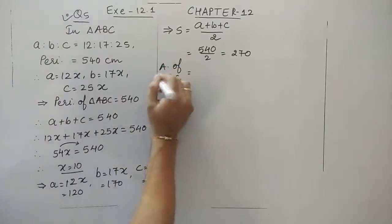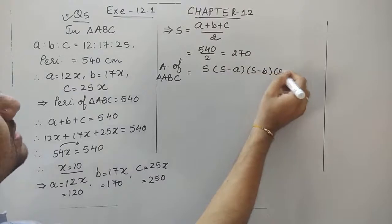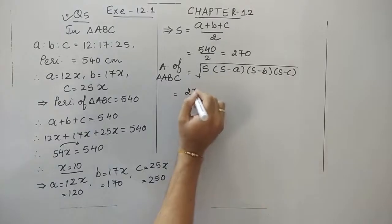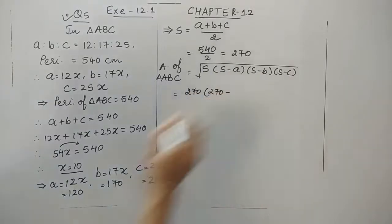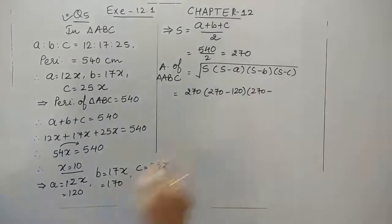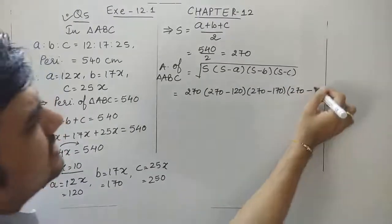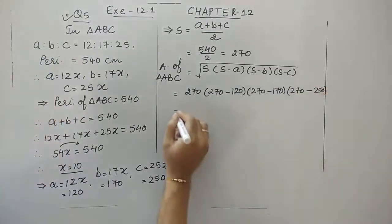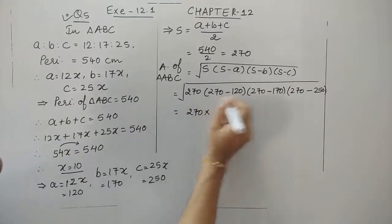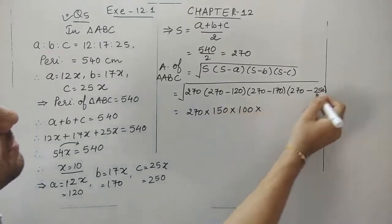Let us find the area of triangle ABC. Write down Heron's formula: square root of S times (S minus A) times (S minus B) times (S minus C). Substituting: S is 270, 270 minus 120 equals 150, 270 minus 170 equals 100, and 270 minus 250 equals 20.